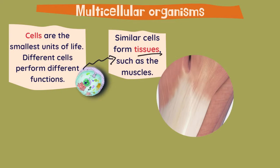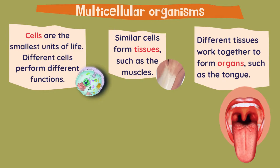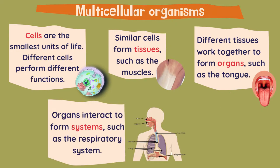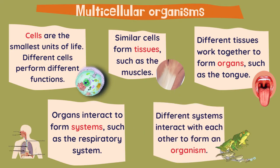Similar cells form tissues, such as the muscles. Then different tissues work together to form organs, such as the tongue. Organs interact with each other to form systems, such as the respiratory system or the circulatory system. Finally, different systems interact with each other to form an organism, like the frog you can see here.